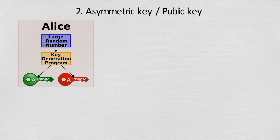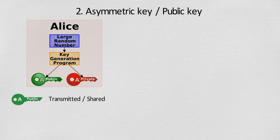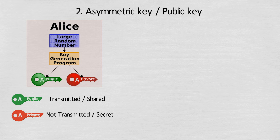In asymmetric public key cryptography, Alice uses a key generation program to generate a public-private key pair. As the name suggests, the public key is meant to be published and transmitted freely over an unsecured channel, while the private key is kept secret. The strength of public key cryptography lies in the fact that it is not computationally feasible to deduce the private key from its corresponding known public key.